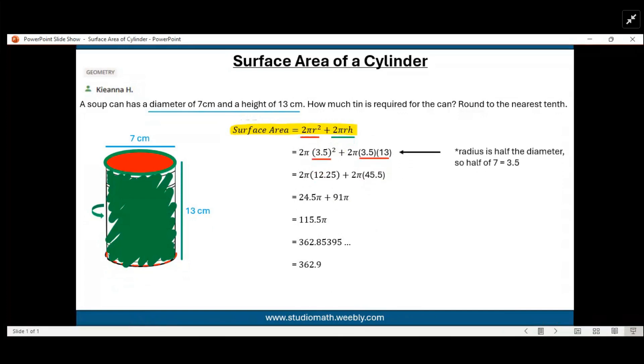The next step for us to do is to plug in all of our values where needed. The radius is not given, so we have to figure that out. The diameter is 7 and radius is half the diameter, which is 3.5. So we replace r, radius, with 3.5 and 13 for h, the height.